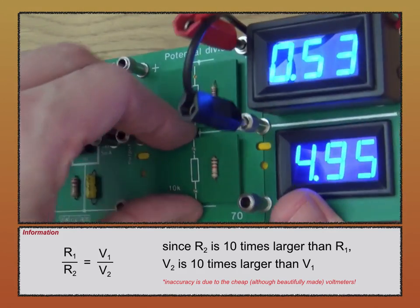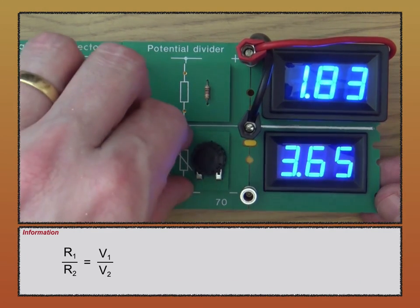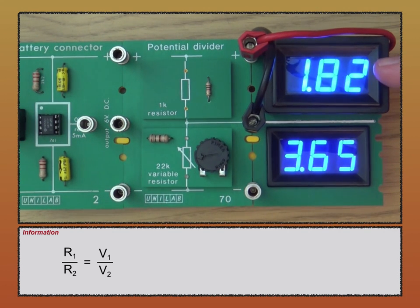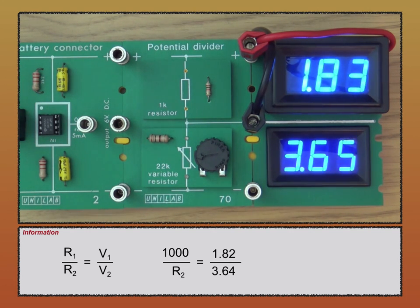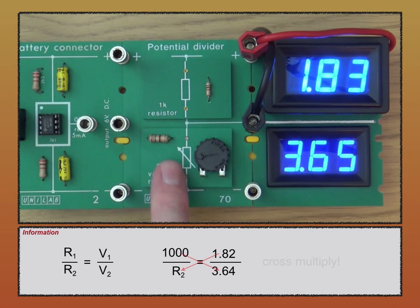Now I'm going to show where you could use that equation. This here is a variable resistor whose resistance can be increased up to 22,000 ohms. When it's placed in the circuit, you can see that this voltage is about half of the voltage down here. We can use the equation R1 over R2 equals V1 over V2 to actually calculate the resistance of this unknown resistor. Since V2 is twice the value of V1, it must be that R2 is twice the value of R1.